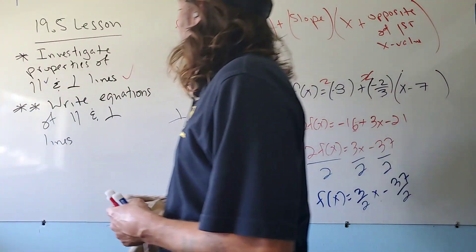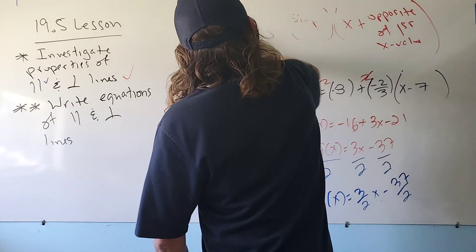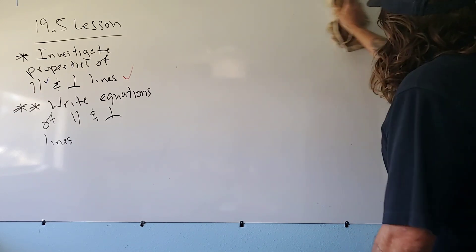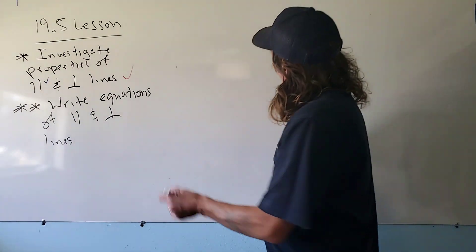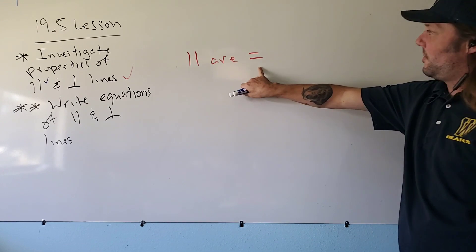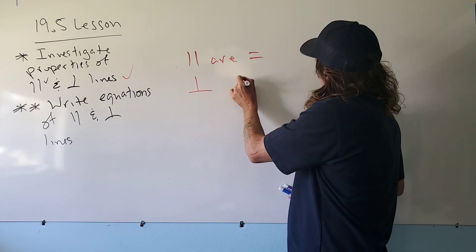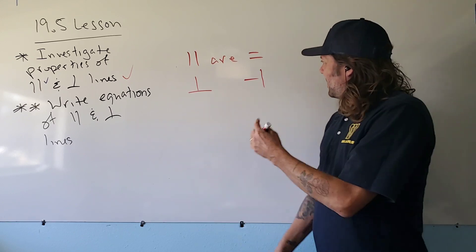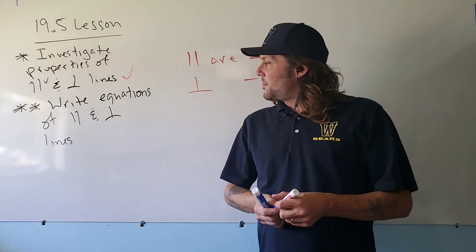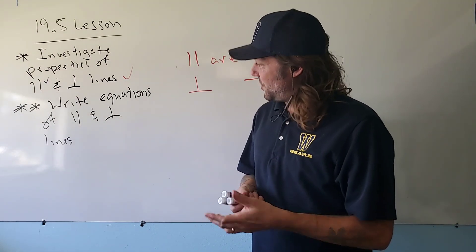Here's a memory trick: the parallel symbol looks a lot like an equals sign, so parallel slopes are equal. Perpendicular slopes multiply to negative 1 — and the only way two numbers can multiply to negative 1 is if they are opposite reciprocals. Your homework on this lesson is problems 1 through 22 from section 19.5.